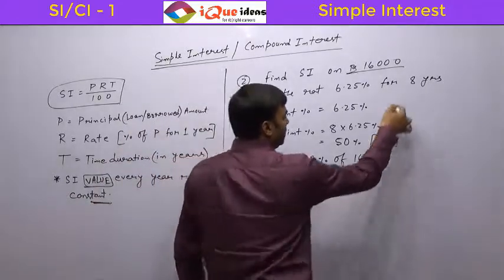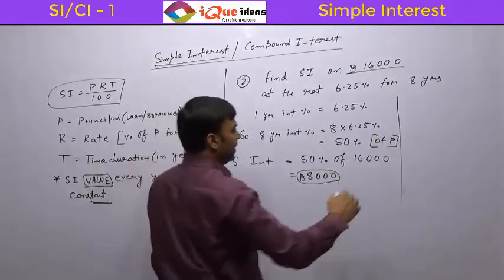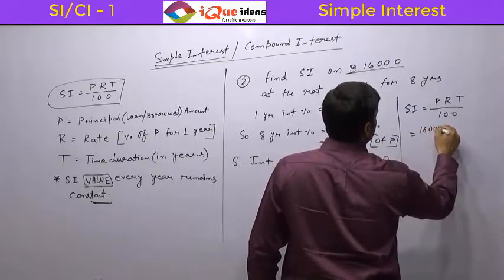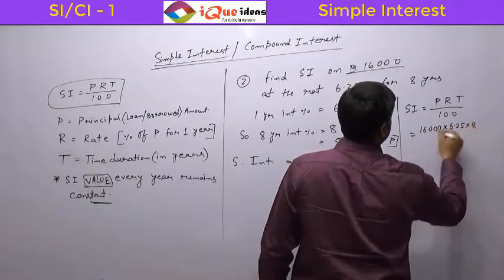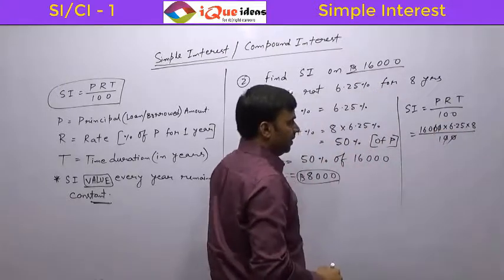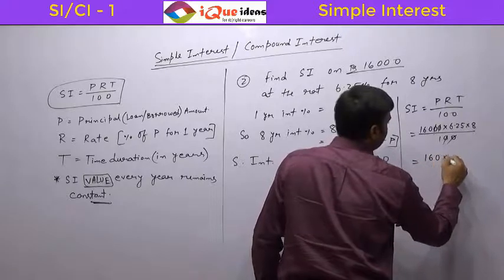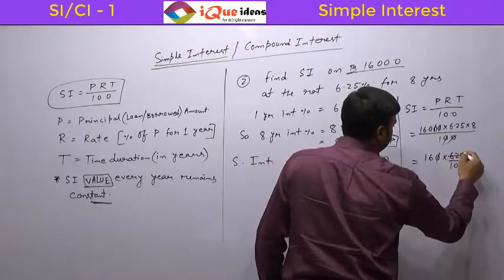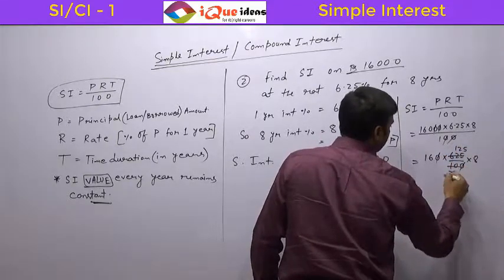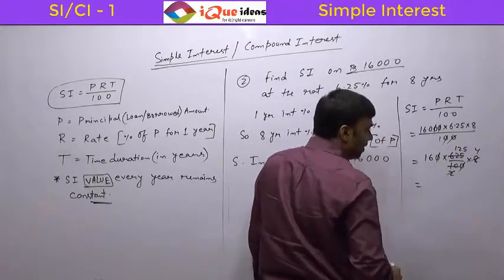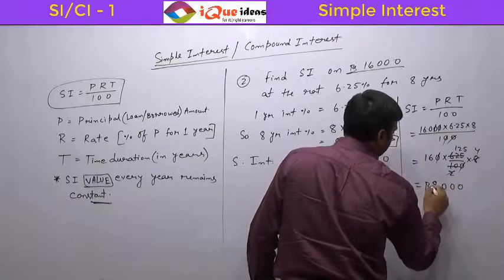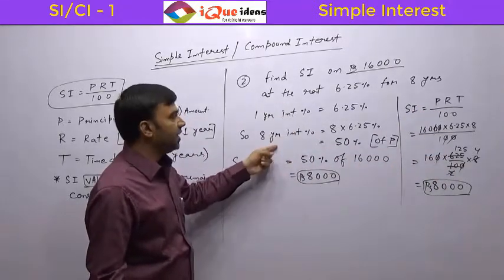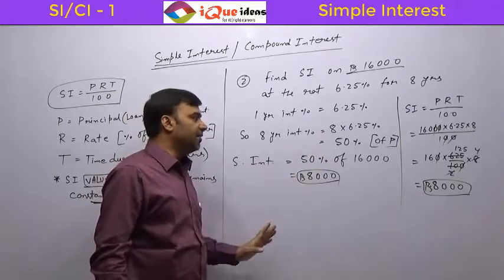You can always use the formula as well. Using PRT/100, P is 16,000, R is 6.25, T is 8, divided by 100. There will be slight calculation trouble: 160 × 6.25 is 625/100 × 8. After cancelling — 5 cancels 625 giving 125, 2 cancels 8 giving 4 — 125 × 4 is 500, and 16 × 5 is 80, giving 8,000. So you can handle decimal values using the formula, or calculate the percentage first then find the final interest value.